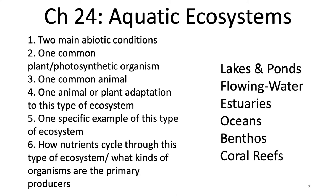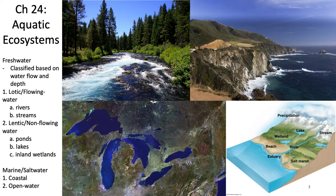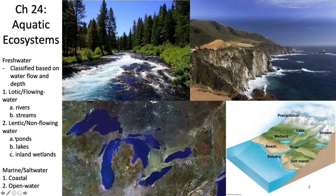Let's talk about the types of aquatic ecosystems. You can have freshwater or marine saltwater. Freshwater systems are classified based on water flow and depth. You can have lotic, or flowing water freshwater systems — these are rivers and streams — and then lentic, non-flowing water, which are ponds, lakes, and inland wetlands. For marine or saltwater environments you can have coastal or open water.